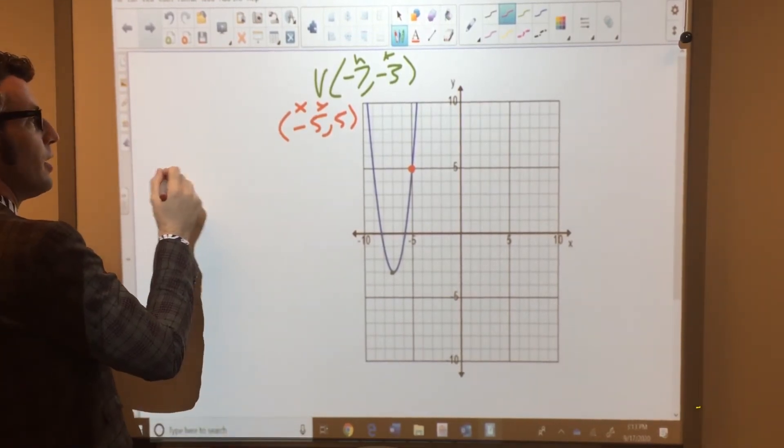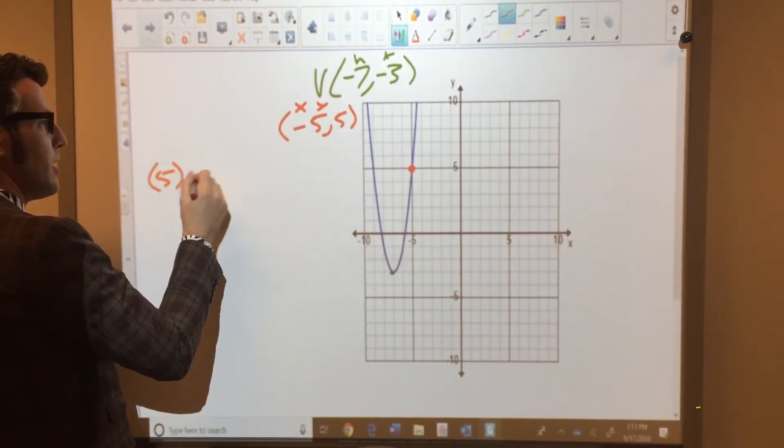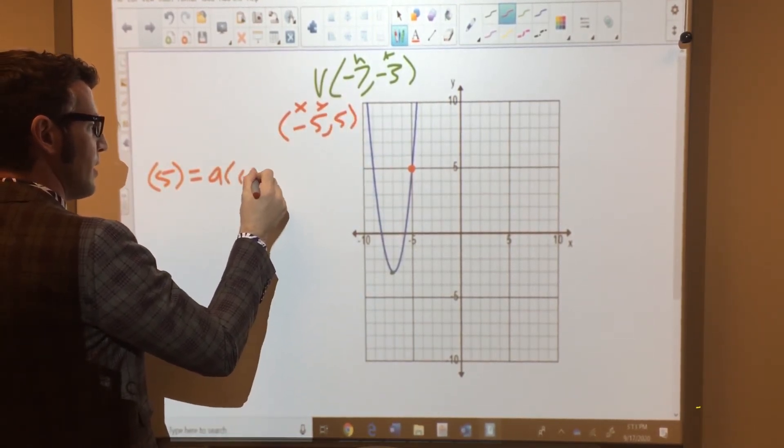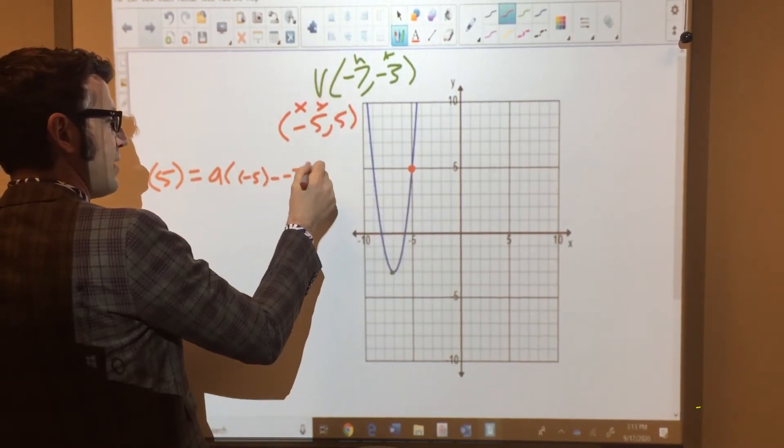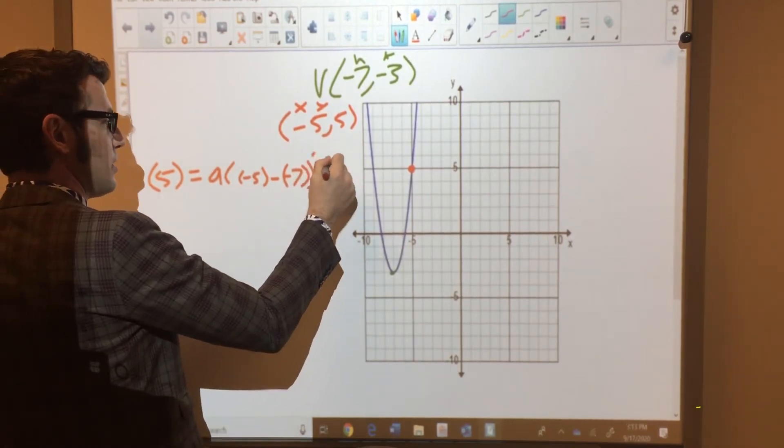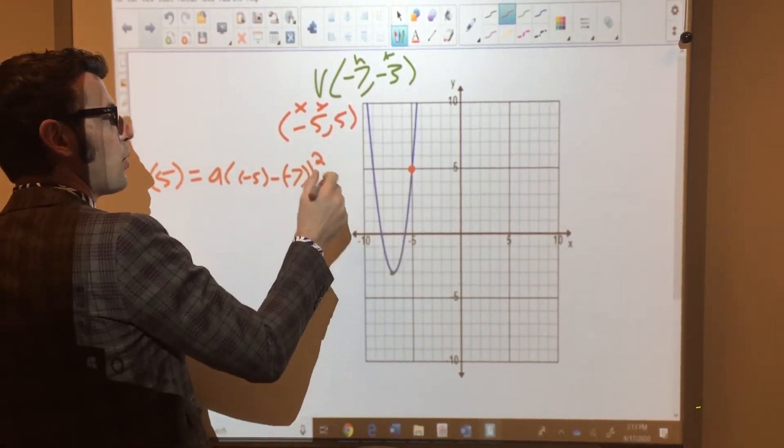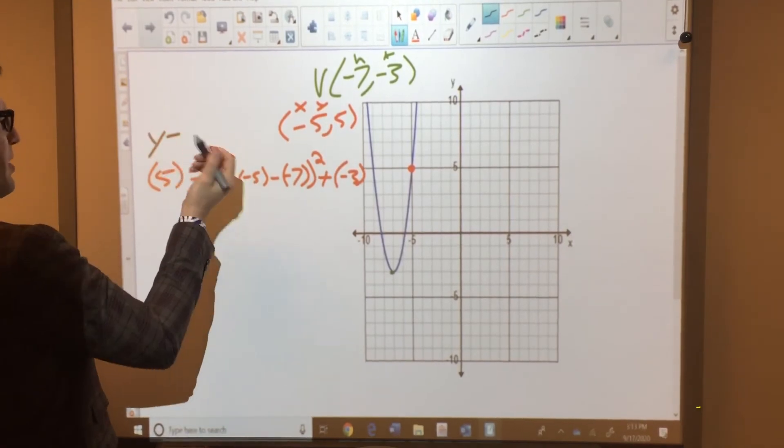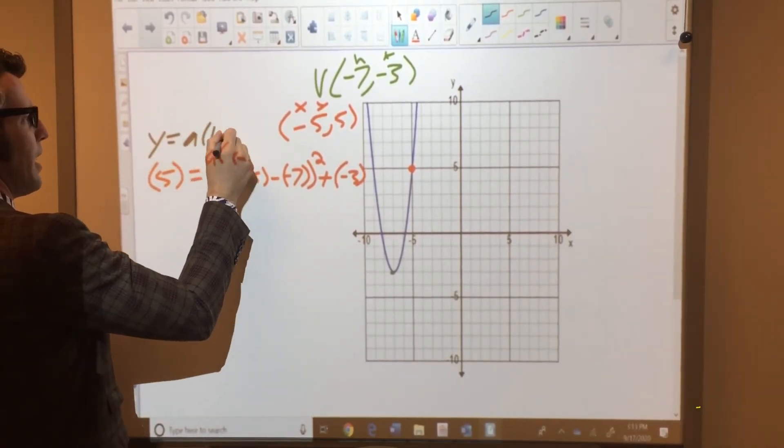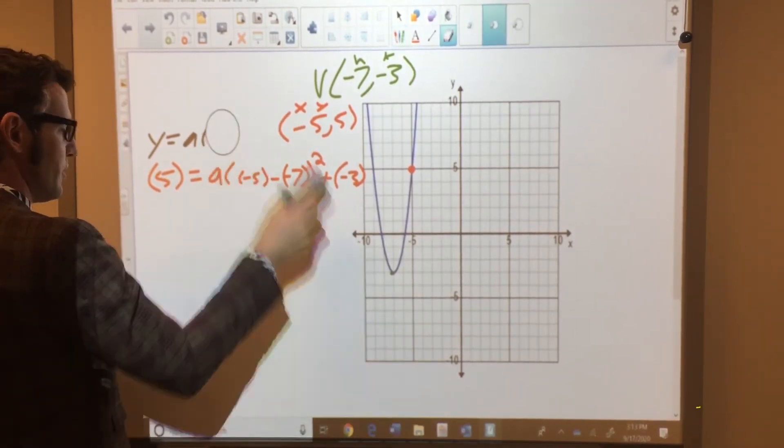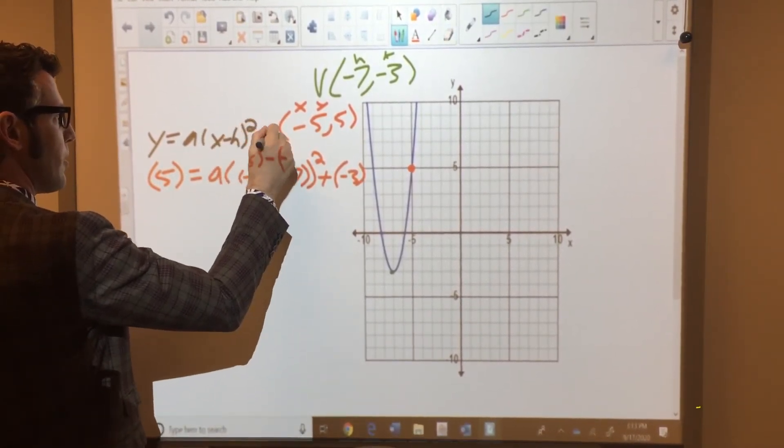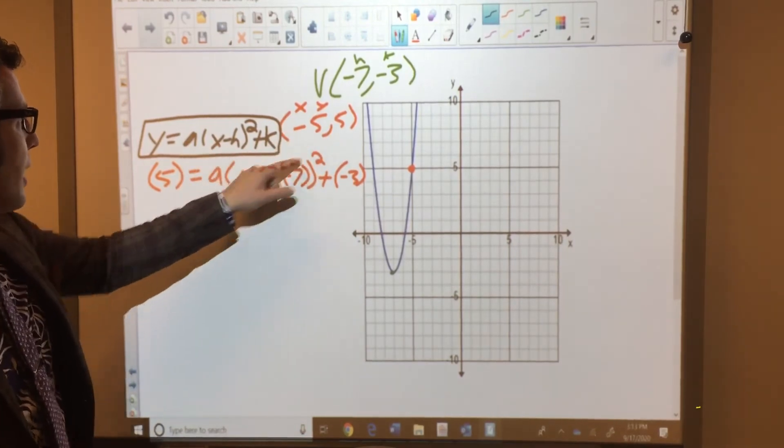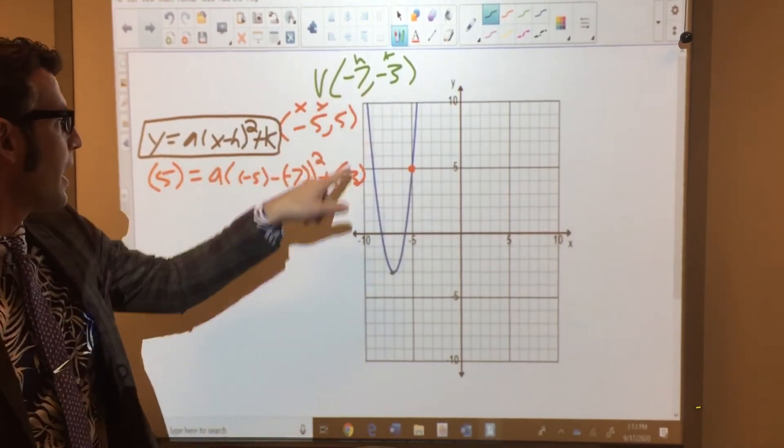I'm going to go back to that vertex form. So I have 5 equals a times x, which is negative 5 in this case, minus the h value is negative 7. Now it's helpful to have these parentheses. You see, hopefully that makes a little more sense. It's why I put the parentheses around everything. Squared and then plus negative 3. So this came, in case you're wondering, this is x minus h squared plus k. That's your vertex form for your quadratic equation. That's the general form. So I plugged in x, I plugged in h, and then I plugged in my k and my y.